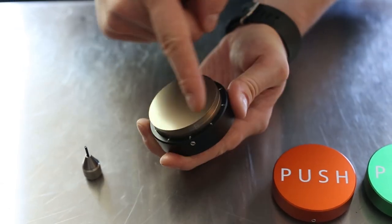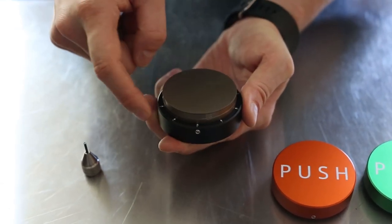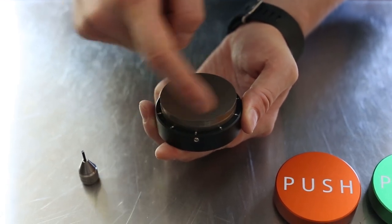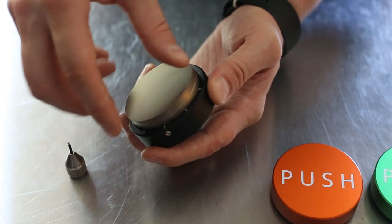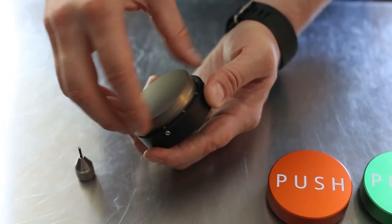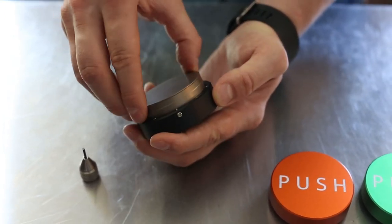You'll notice these radial markings that count from 0.0 all the way around back to 0.0. Basically, every full rotation of the piston is a difference of one millimeter in depth.